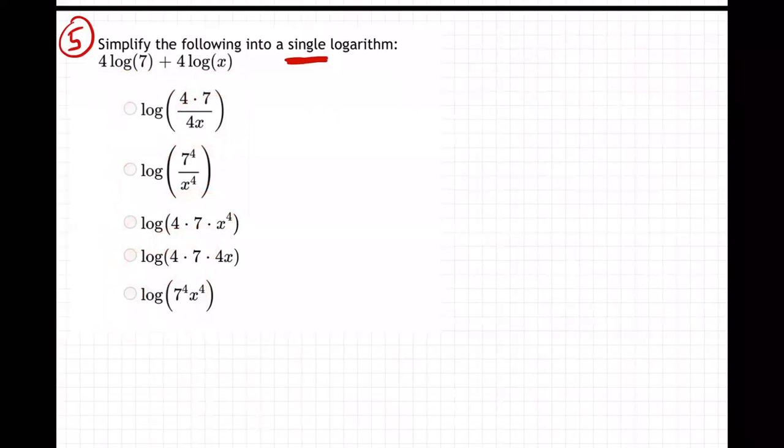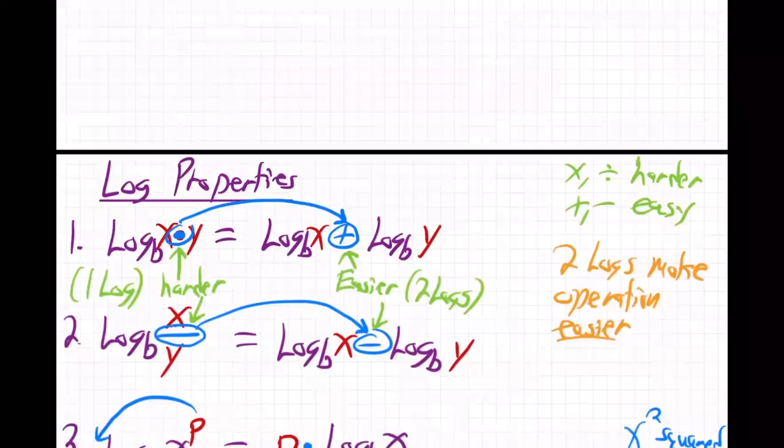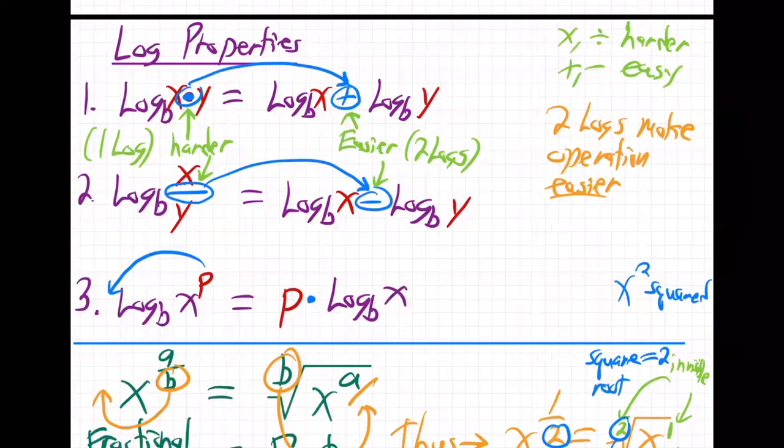So now we're running things backwards. Let me show you the properties. It's all based on these three log properties. Notice now we're running them backwards. What I mean is we're supposed to go from the right side to the left because we're supposed to go from two logs back to one.